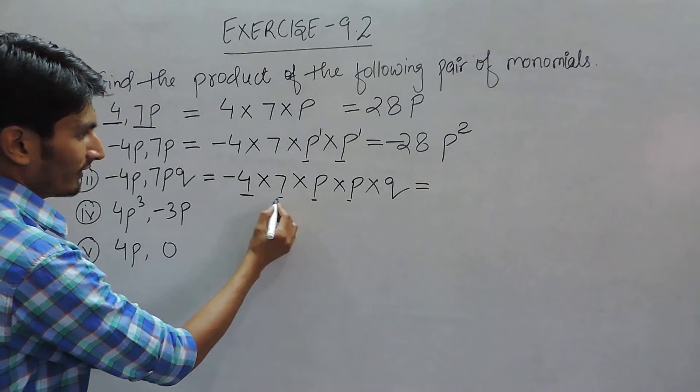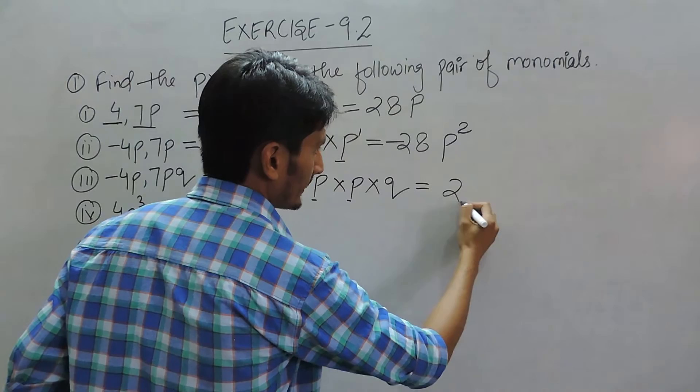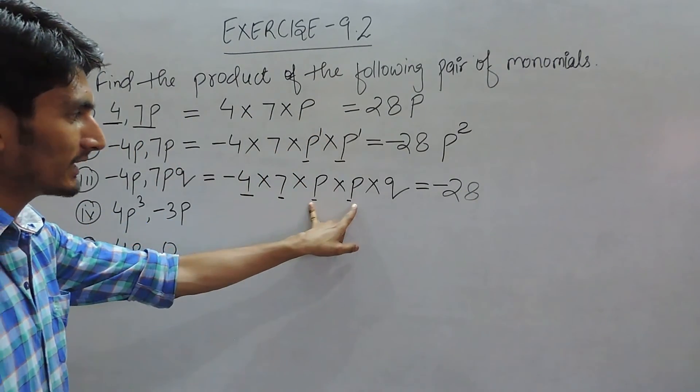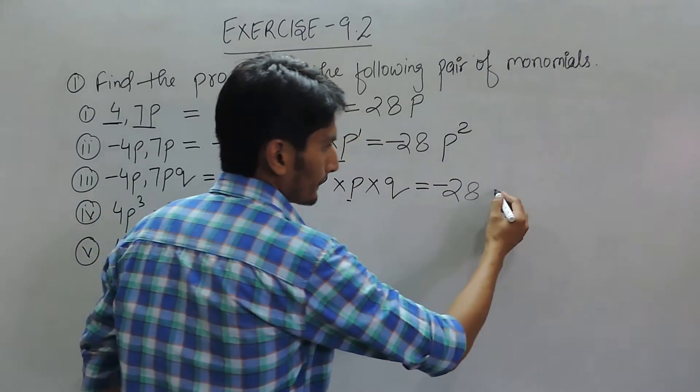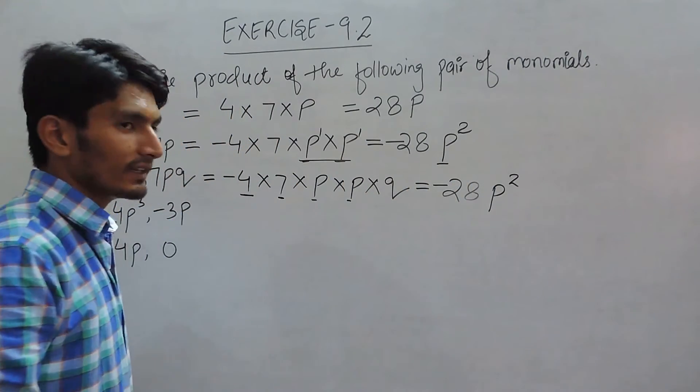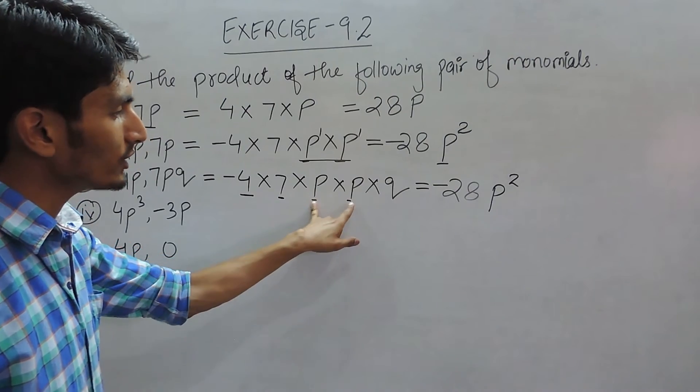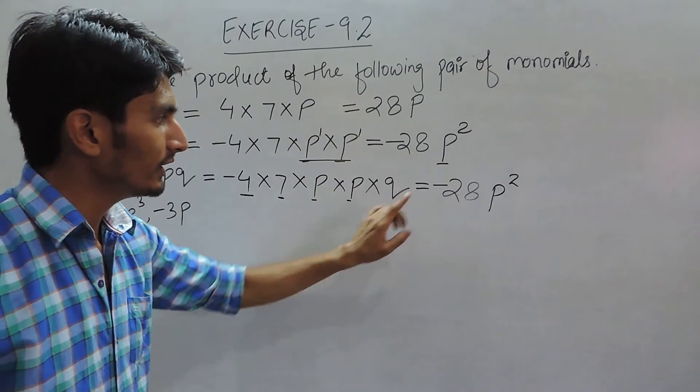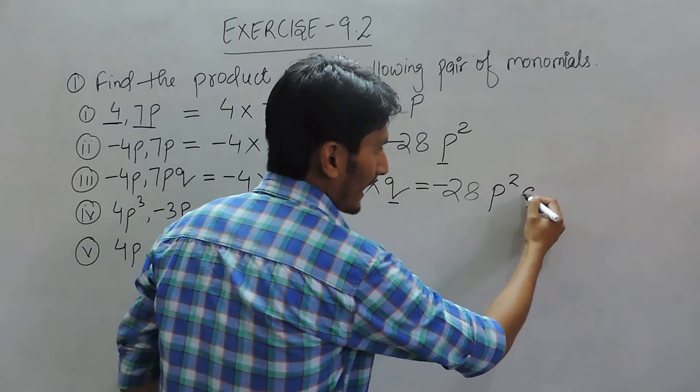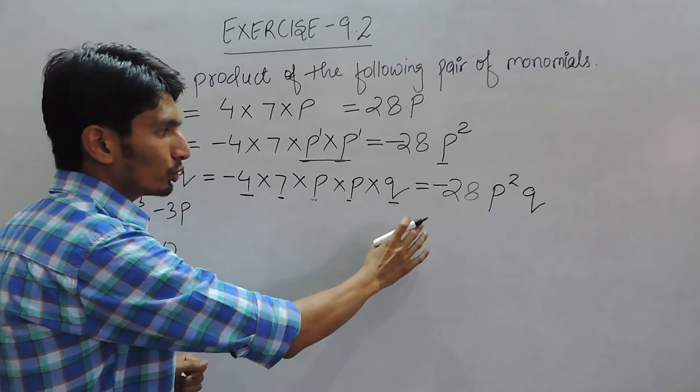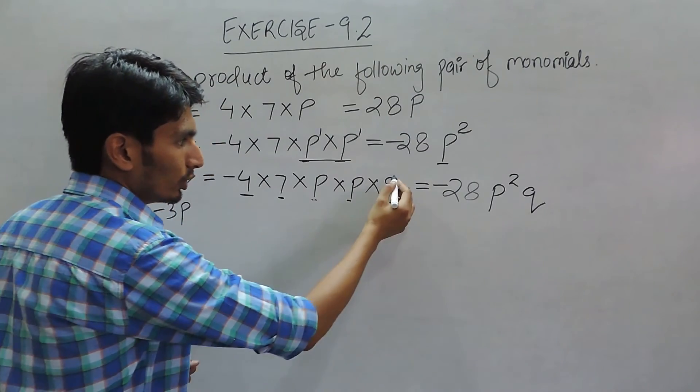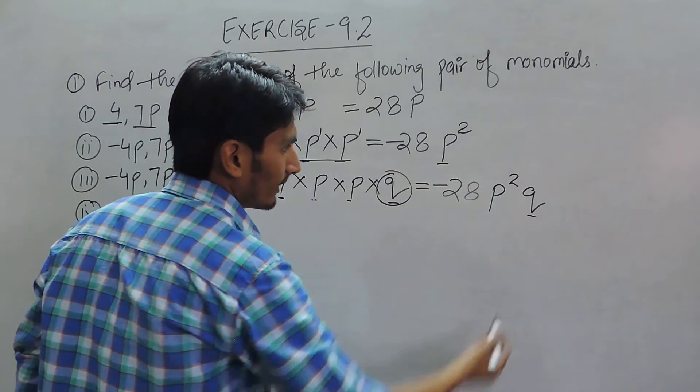When -4 multiplied by 7 will give -28, and when P is multiplied by P will give P² as given here. One thing is important: you can only solve like terms. You should not add the power of Q to P. Q will remain as it is because there is no Q in this question which can be multiplied by Q. So this will remain separate.